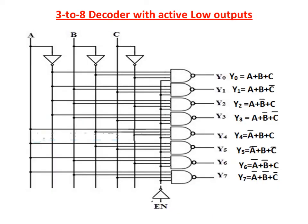This is the logic diagram for the 3-to-8 decoder with active low outputs. Active low outputs are implemented with NAND gates. The enable inputs and the 3 inputs A, B, C are connected through inverters, and Y0 to Y7 outputs are obtained.